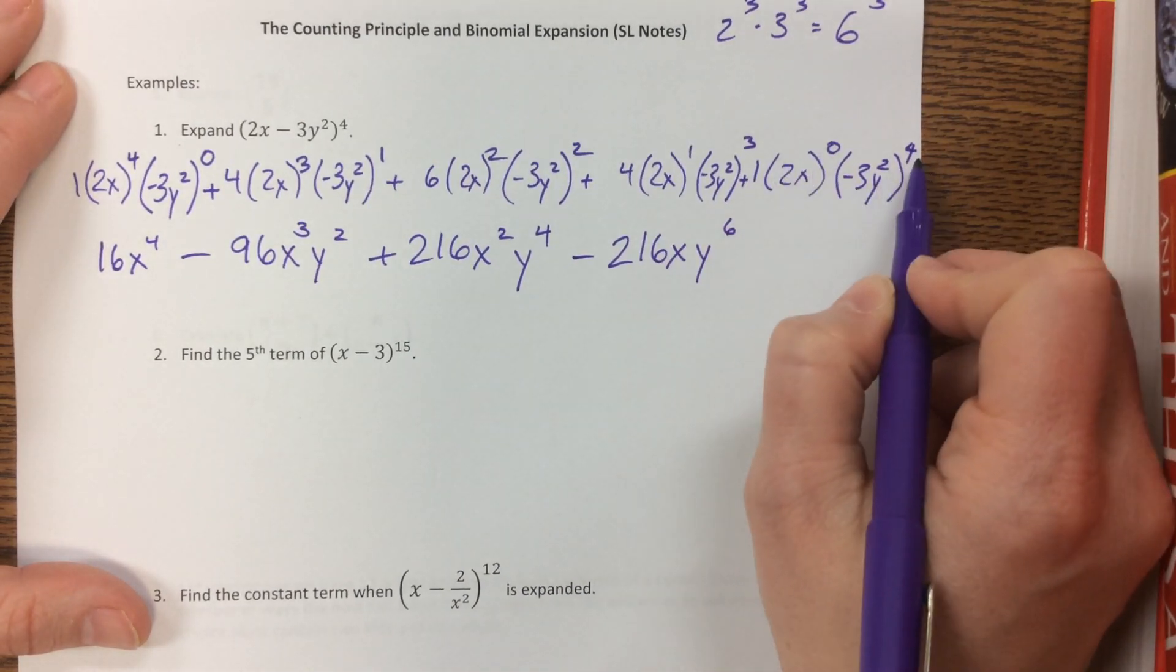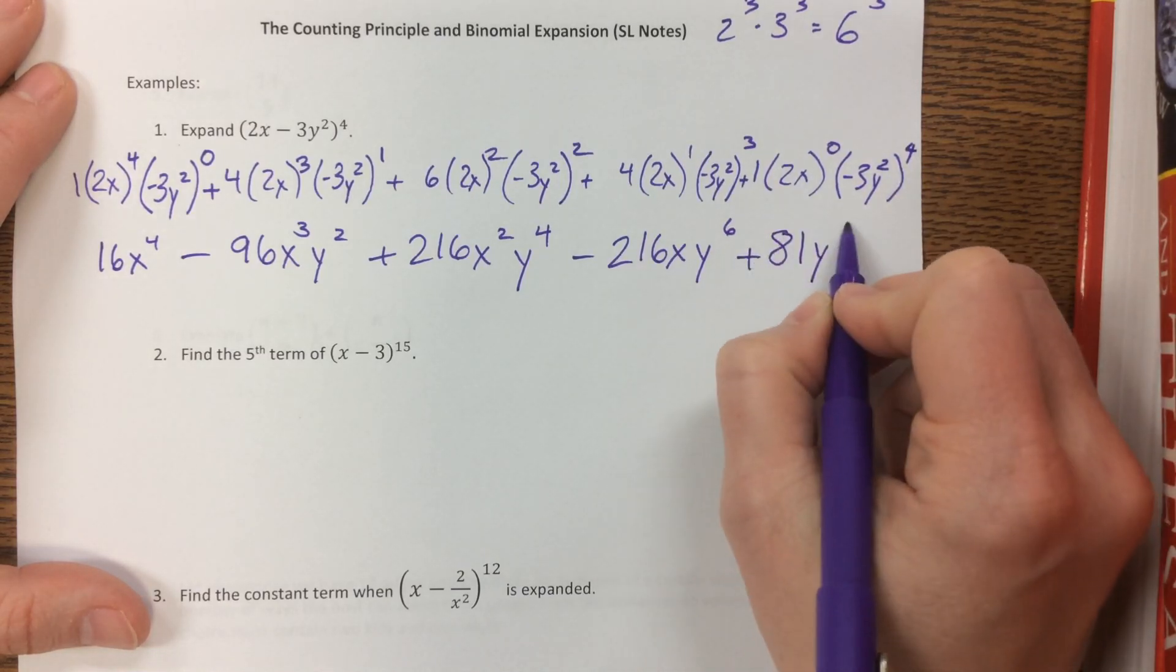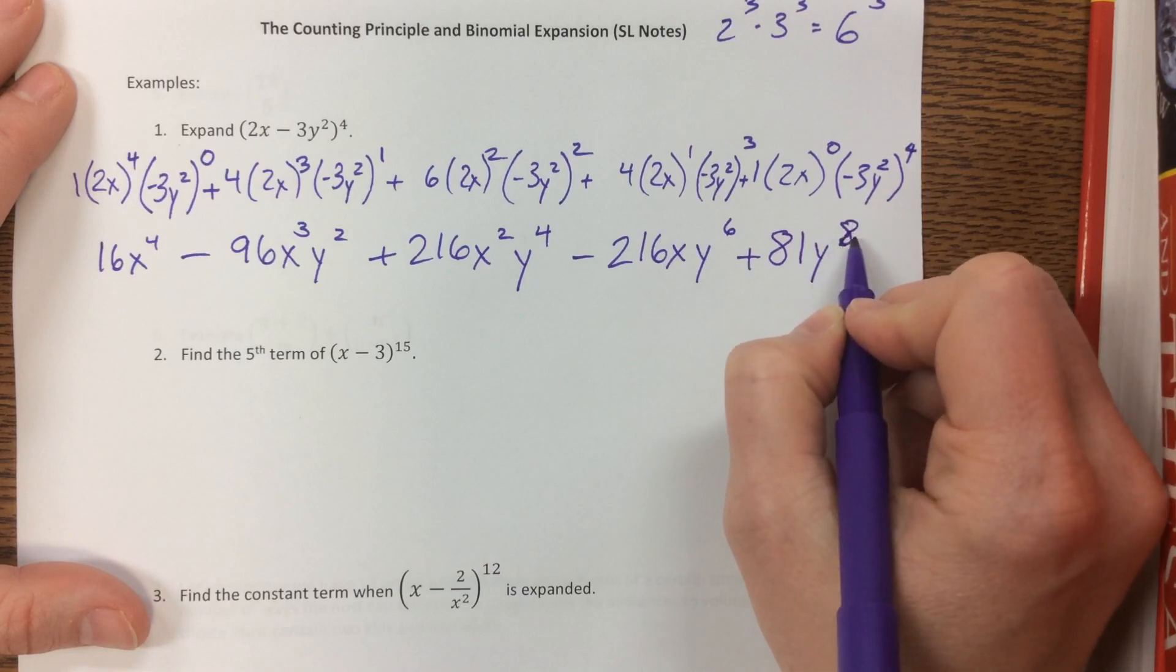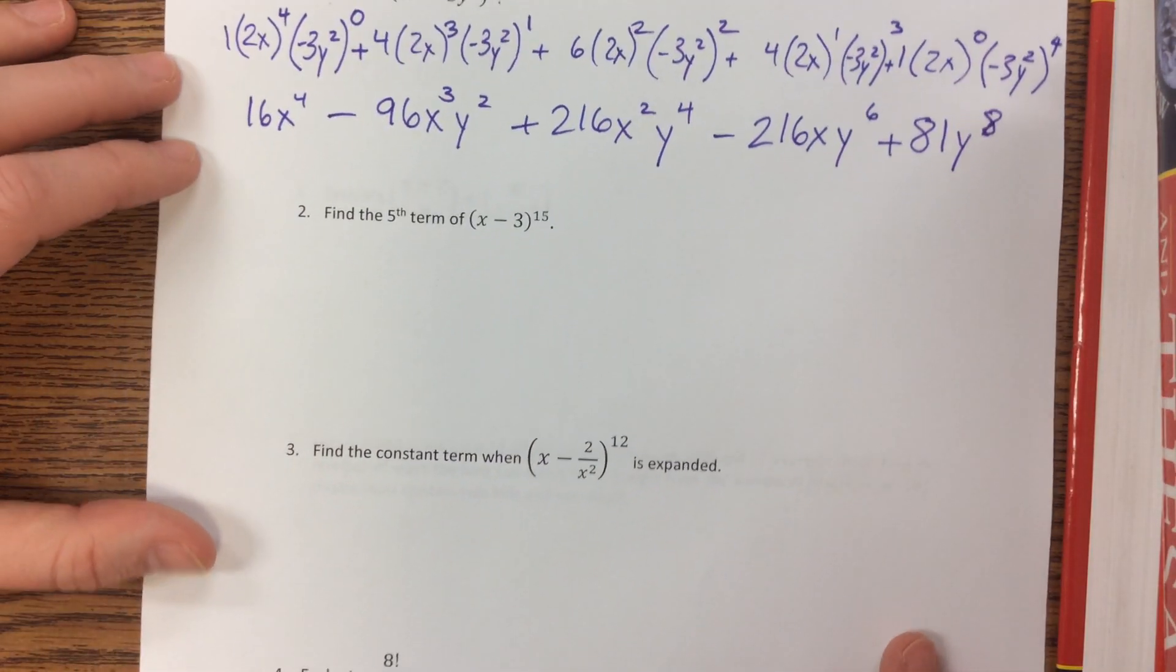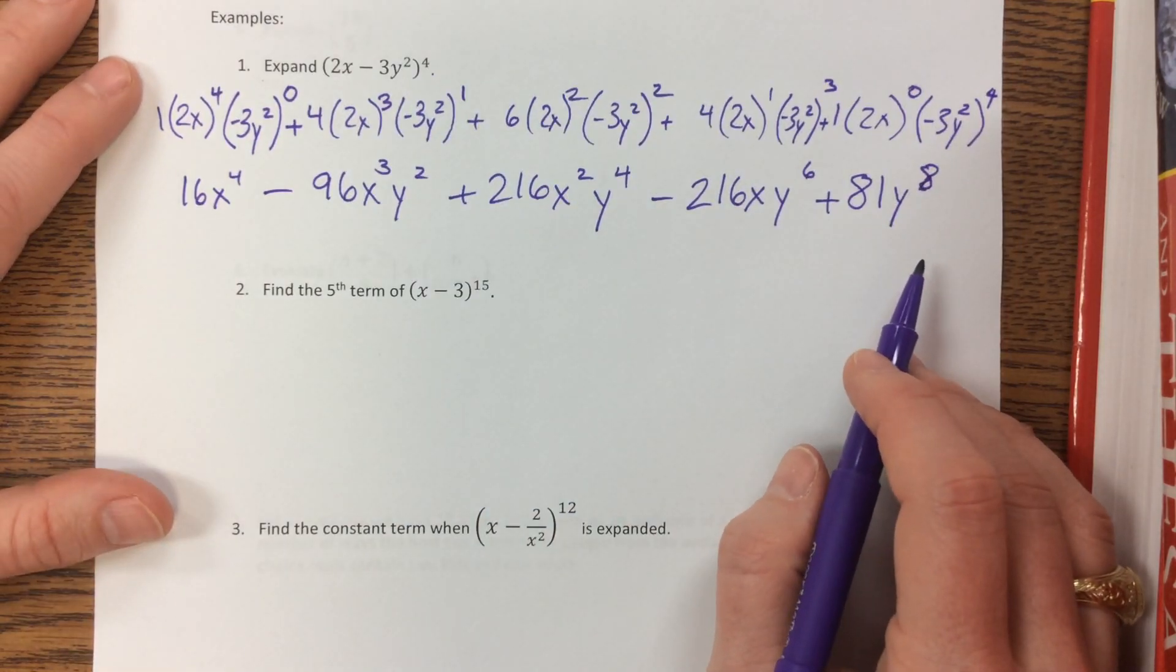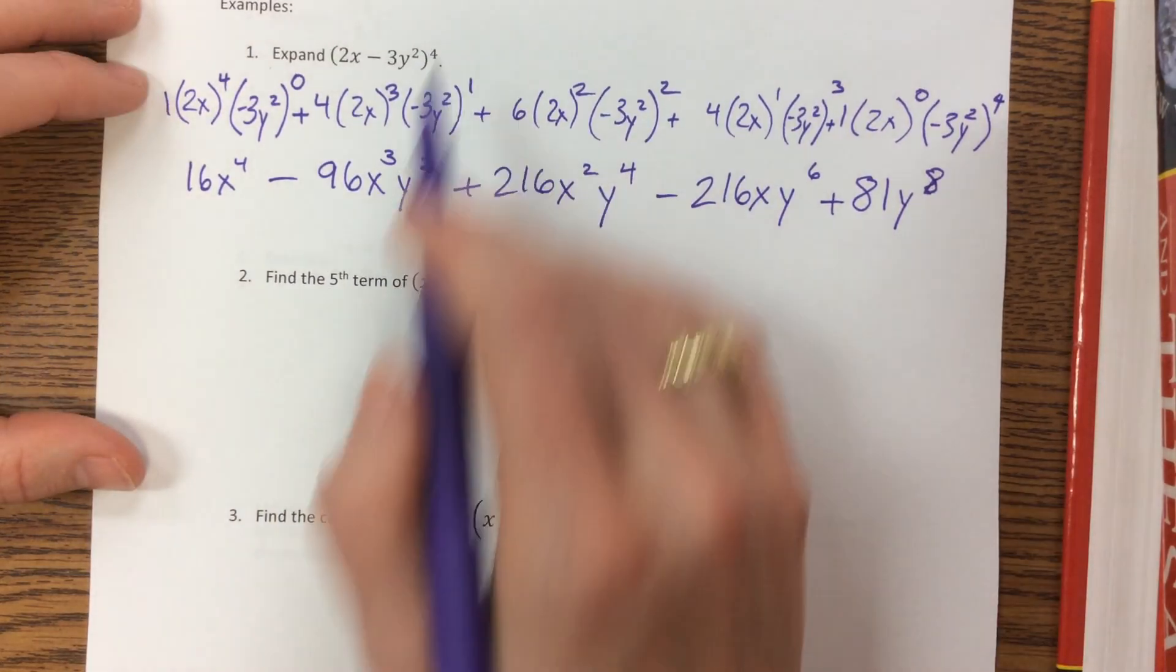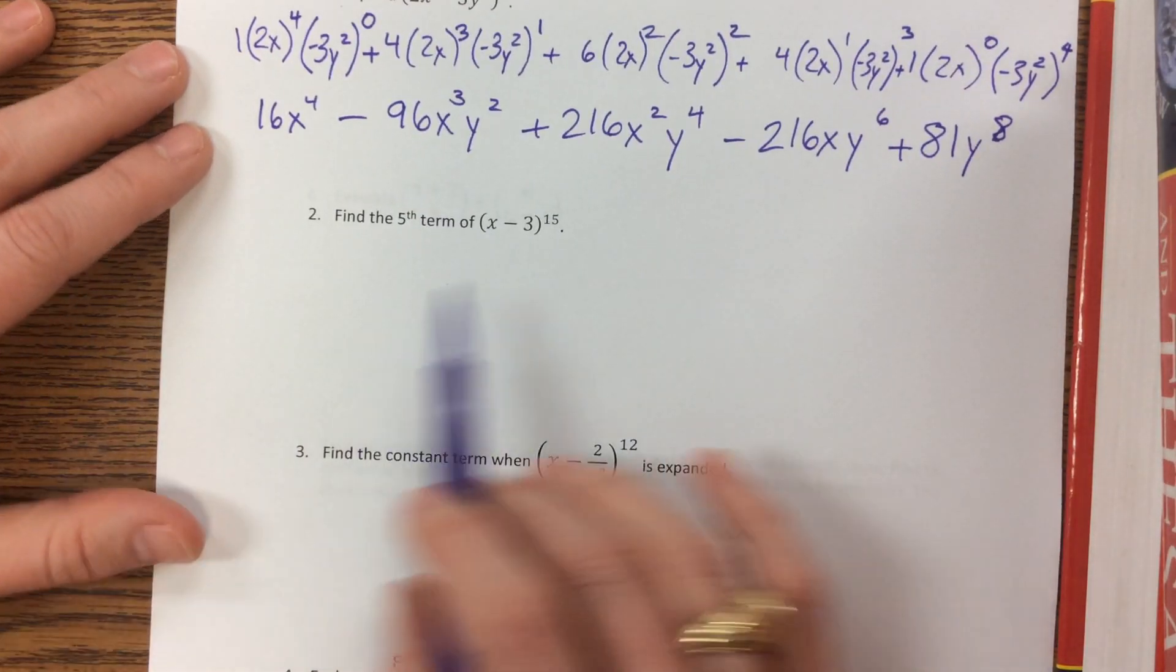And then our last term, here's a 1, this is a 1, this gives me 3 to the 4th power is 81. It's a positive, and this becomes y to the, yep, 2 to the 4th is 8. Okay, so that becomes your expanded term. I wouldn't make you do this for a ton of different terms, but you could do it up to the 4th power. Maybe even 5th.